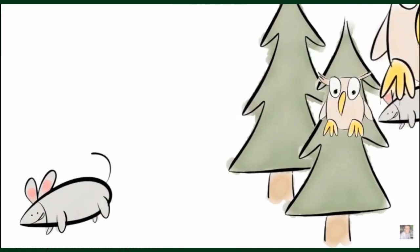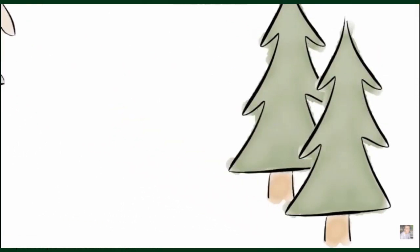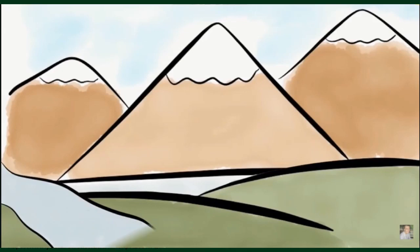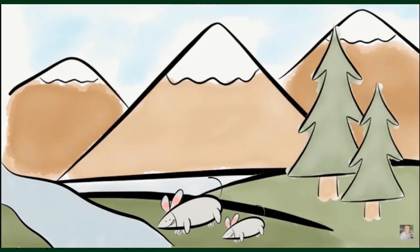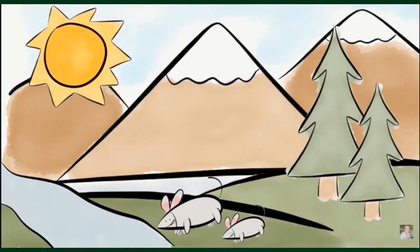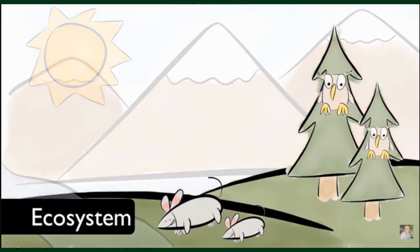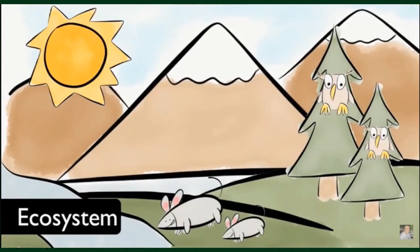In the forest, a population of owls interacts with the population of mice. Owls hunt and kill mice as they obtain food they need to survive. Non-living things also interact with the community — mountains shape the land, rivers provide water to the animals, soil gives a place for the trees to grow, and sunlight provides energy to the plants. An ecosystem is a term that scientists give to all of the living and non-living things in the area. A forest is just one example of an ecosystem.